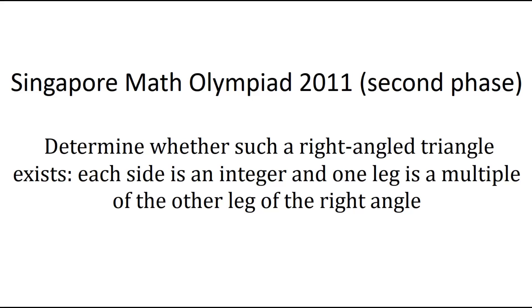Determine whether such a right-angled triangle exists where each side is an integer and one leg is a multiple of the other leg of the right triangle. If you have a solution to this problem, please write it down in the comments. If not, let's go through one solution step by step together.